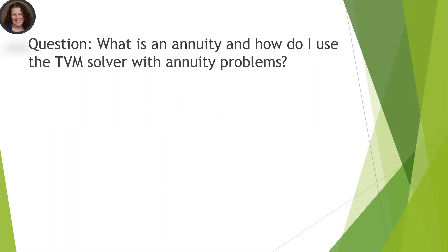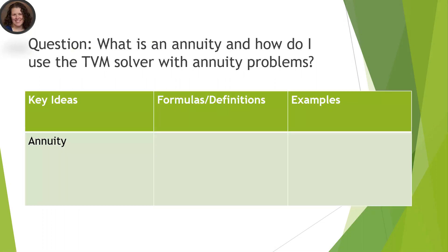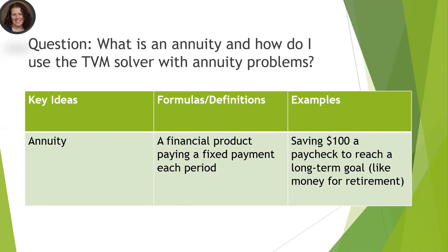So what's an annuity? How do you use the solver to solve these types of problems? An annuity is some type of financial product, a way to invest your money, where you pay a fixed amount every period. For example, if you save $100 for each paycheck to reach a long-term goal like retirement, that's a big idea of an annuity.